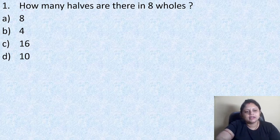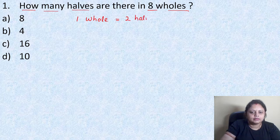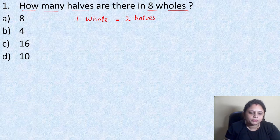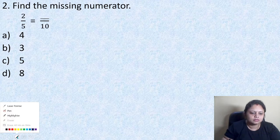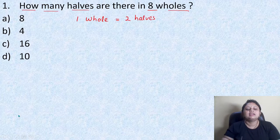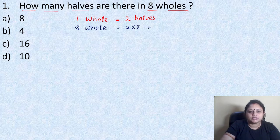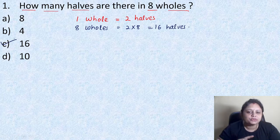In the question it is given: how many halves are there in 8 wholes? You know in one whole, 2 halves are there. So in 8 wholes, it will be 2 into 8, that is equal to 16 halves. So here the correct answer is option C, that is 16.